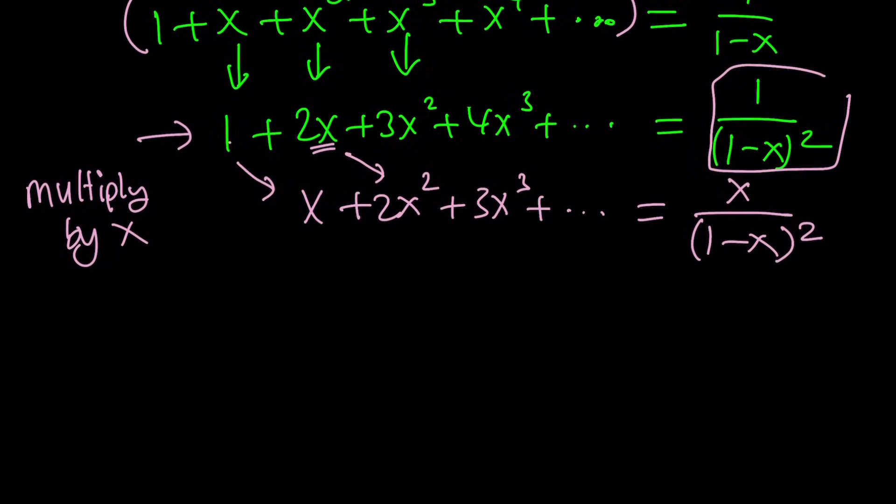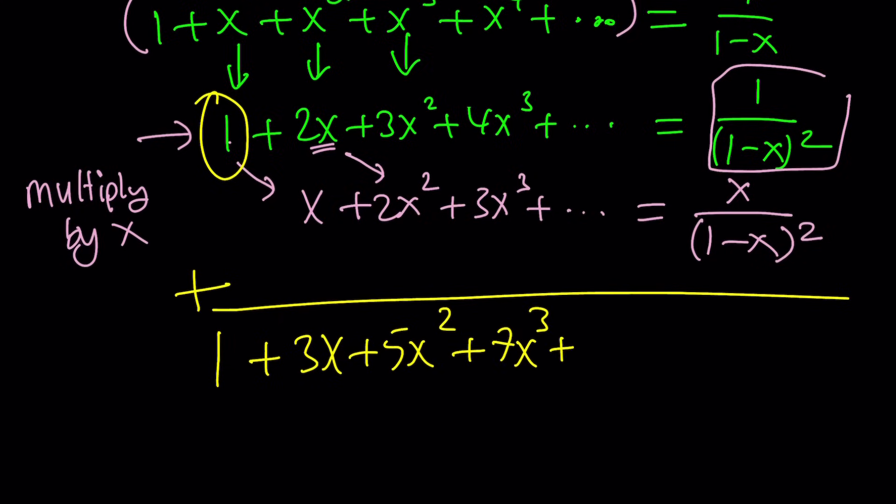Now here's the magic. The mathematical touch. Add these two expressions and ta-da! You get 1 plus 3x plus 5x squared plus 7x cubed. We got the answer. And of course these two have the same denominator. So I can add the numerators and get the answer: 1 plus x divided by 1 minus x quantity squared.